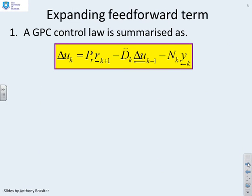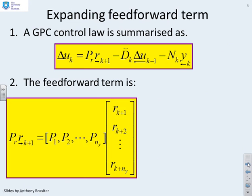Let's expand it. The feedforward term can be expanded by recognizing that PR has ny terms: P1, P2 all the way to Pny, and they multiply r future which is rk+1, rk+2, all the way to rk+ny. I can see explicitly how future target information affects the control law through these terms P1, P2 up to Pny.